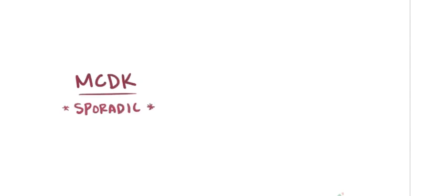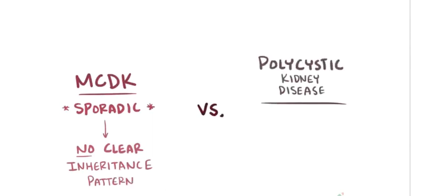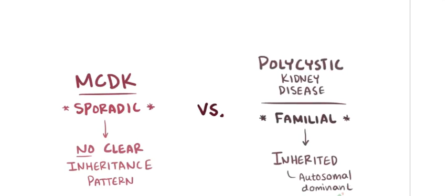MCDK is usually a sporadic condition that happens during development, and does not follow a clear inheritance pattern, which is an important distinction from polycystic kidney disease, a similar cystic kidney disease that's familial, meaning inherited, and in this case it's typically passed through autosomal dominant inheritance.